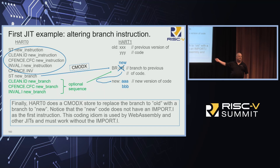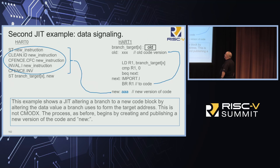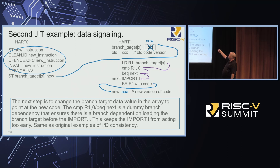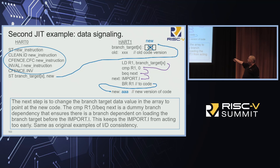Let's look at a second JIT example. The setup is the same — the producer is creating new code. But in this case we're not modifying a branch instruction; we're going to modify a value in a jump table and branch to that value from the jump table with a load and branch. In between, there's a seemingly silly little dance: we look at the loaded value, compare it to some number, then branch to the very next instruction — a dummy dependency that does no functional work. But what it does is cause an import.I to be in the path, and causes there to be an unresolved branch in front of the import.